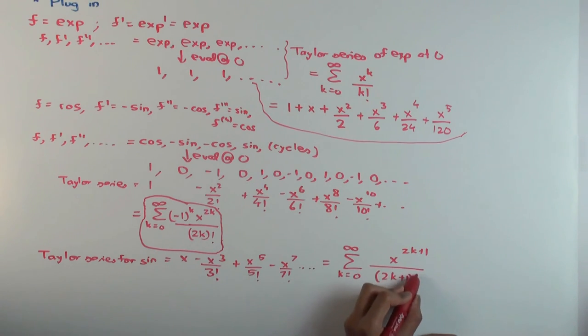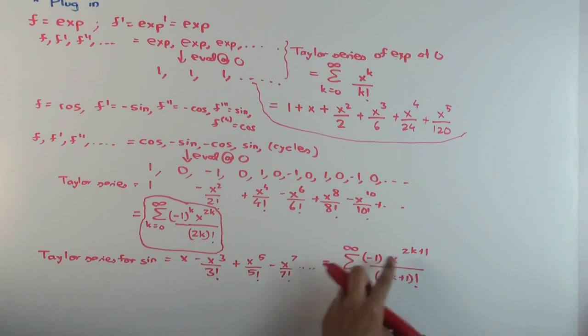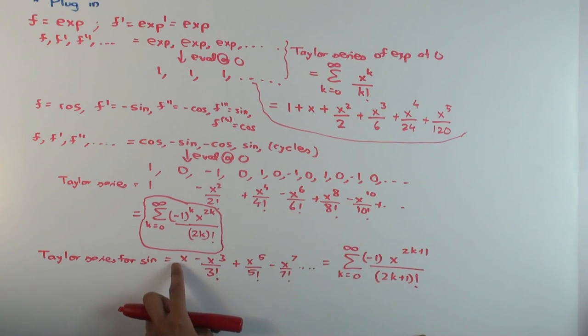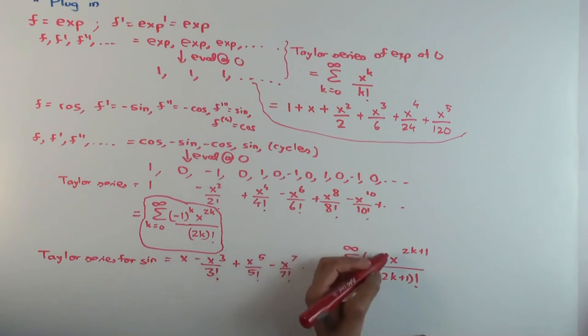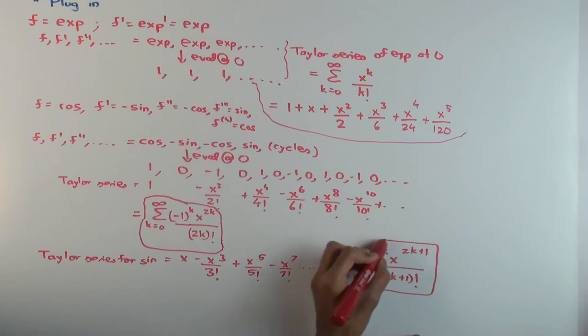And now how would you write it in the summation notation? So I'll still do k equals 0 to infinity and I'll put x to the 2k plus 1 over 2k plus 1 factorial. And now you want a minus 1 to the power something. Just be careful what you put here. So when you have k equals 0, then you'll get x to the 1 over 1, you want a positive, so you put minus 1 to the k. That will work. When you have k equals 1 you get x to the 3 over 3 factorial, that will have a negative thing.